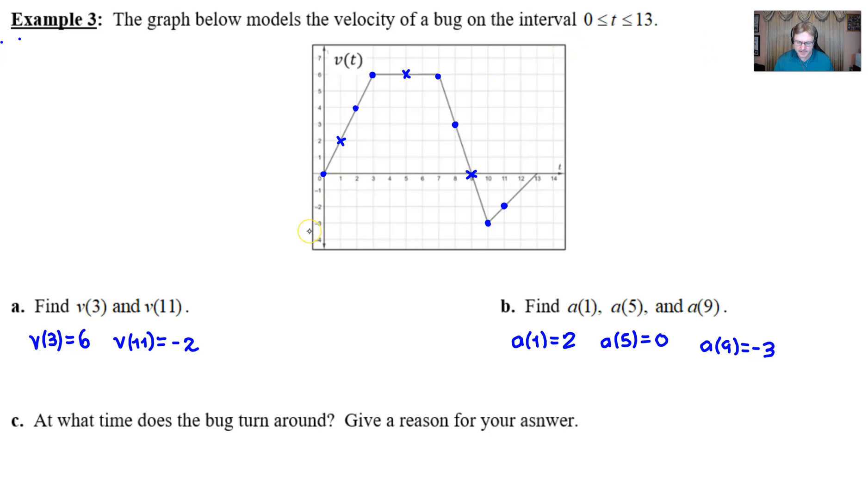Part c: at what time does the bug turn around? Now we're getting into things that are a little bit more complicated, and you have to think common sense. Let's draw a little bug. Here's our bug with a nice little head and antenna. Let's see, can I make this bug move? Looks like I can. This bug is moving and then he decides he wants to turn around. It's very important to understand that when we study motion in calculus AB, we're only going to talk about motion on a straight line. That's why they call it straight line motion.